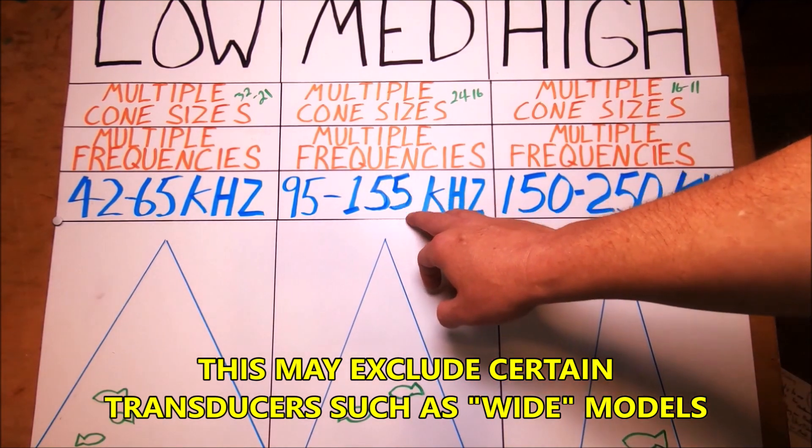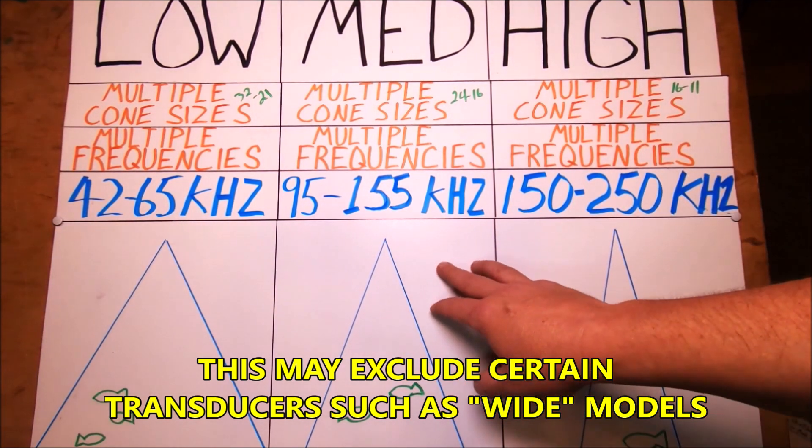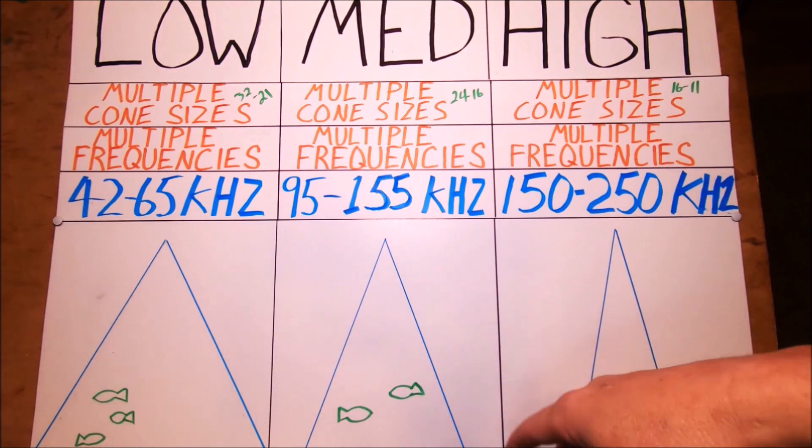So you're getting multiple cone sizes and multiple frequencies. That's what gives you the fantastic performance of a chirp transducer.